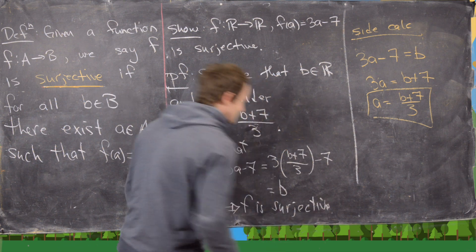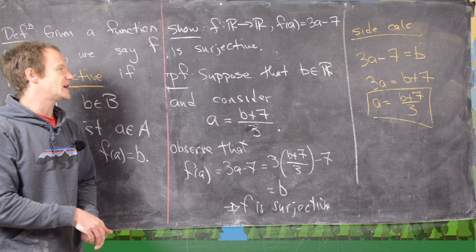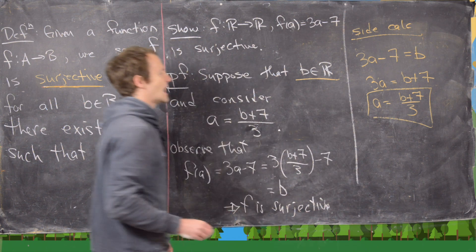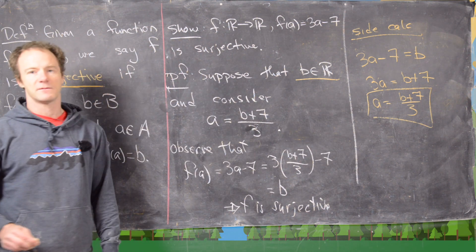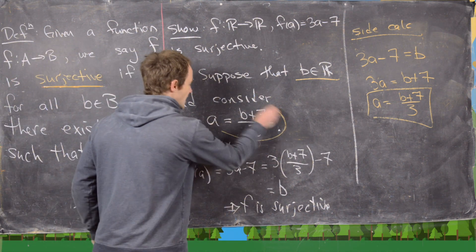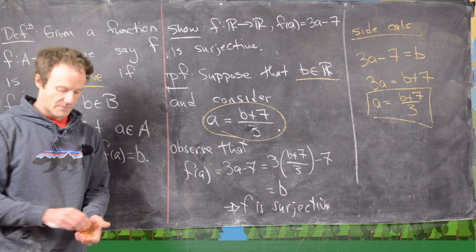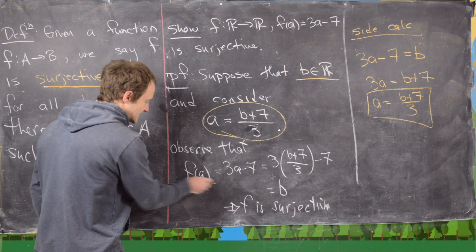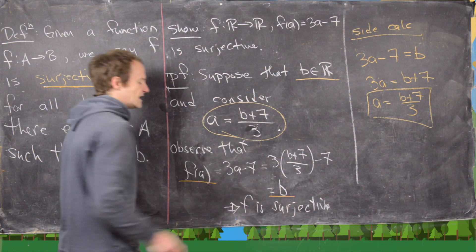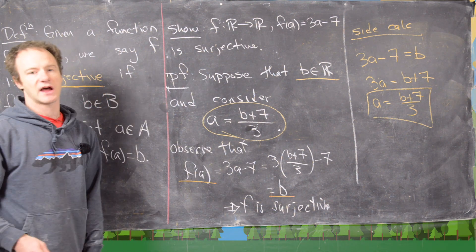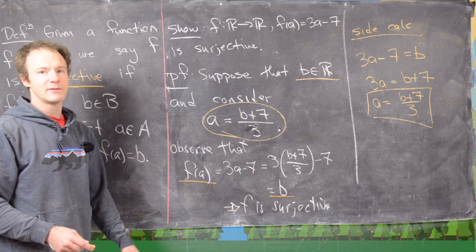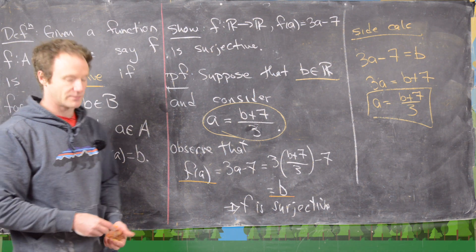Why does this mean f is surjective? Because what we've done is taken an arbitrary element from the codomain, constructed an element from the domain, and shown that when we plug that domain element into the function, we get our arbitrary element from the codomain. Now let's look at one more example.